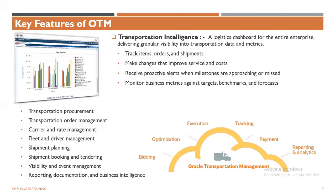Moving on to transportation intelligence — any logistics service provider has KPIs, and based on those KPIs they publish reports showing how much was spent in a particular month and how much profit was gained. OTM provides that kind of dashboard under the transportation intelligence module, where you can easily generate reports and pie charts based on business needs. It is also helpful for monitoring your business in terms of targets, benchmarks, and forecasts.